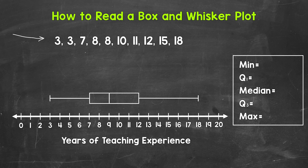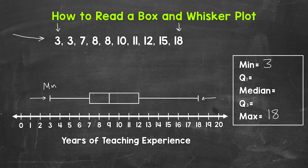Let's start by taking a look at the minimum and the maximum. The minimum number of years of teaching experience is three, and the maximum is 18. The minimum and maximum are just the smallest and largest values within the data set. On the box and whisker plot, we have the minimum right here and the maximum right here. The whiskers that extend out from the rectangle extend to the minimum and to the maximum.